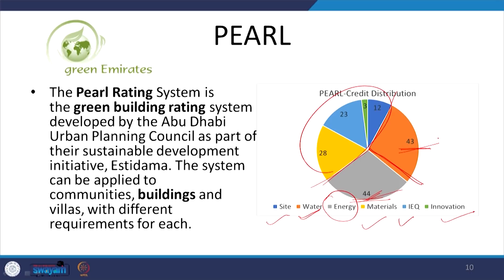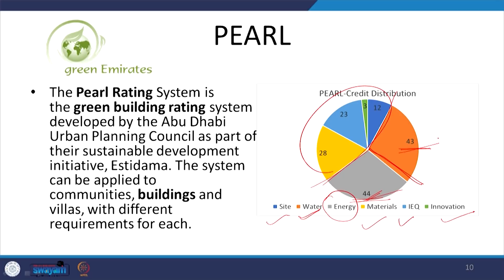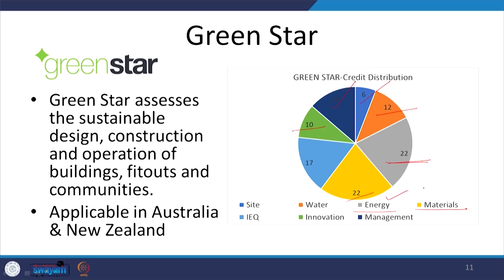Green Star is applicable in Australia and New Zealand and assesses the sustainable design, construction and operation of buildings, fit-outs, and communities. Again we see a lot of emphasis on energy and materials, which are given greater importance. This comparison between rating programs leads to very interesting findings about the common global trend and the regional variations within these.